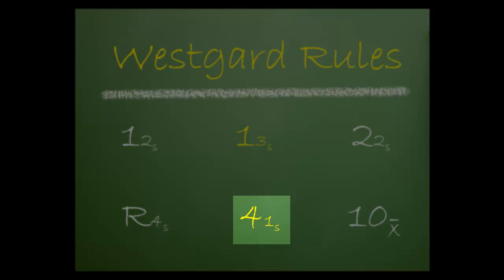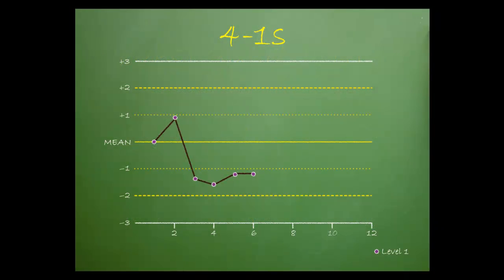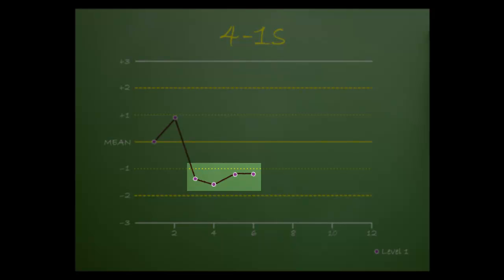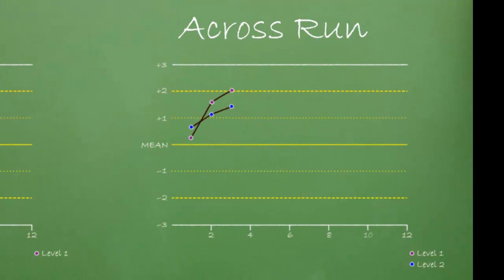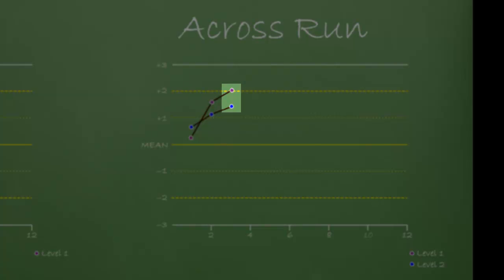Next is 4-1-S. This rule is violated when four QC results on the same side of the mean exceed one standard deviation. This rule can also be violated across a run. This happens when both levels of control exceed one SD on the same side of the mean.